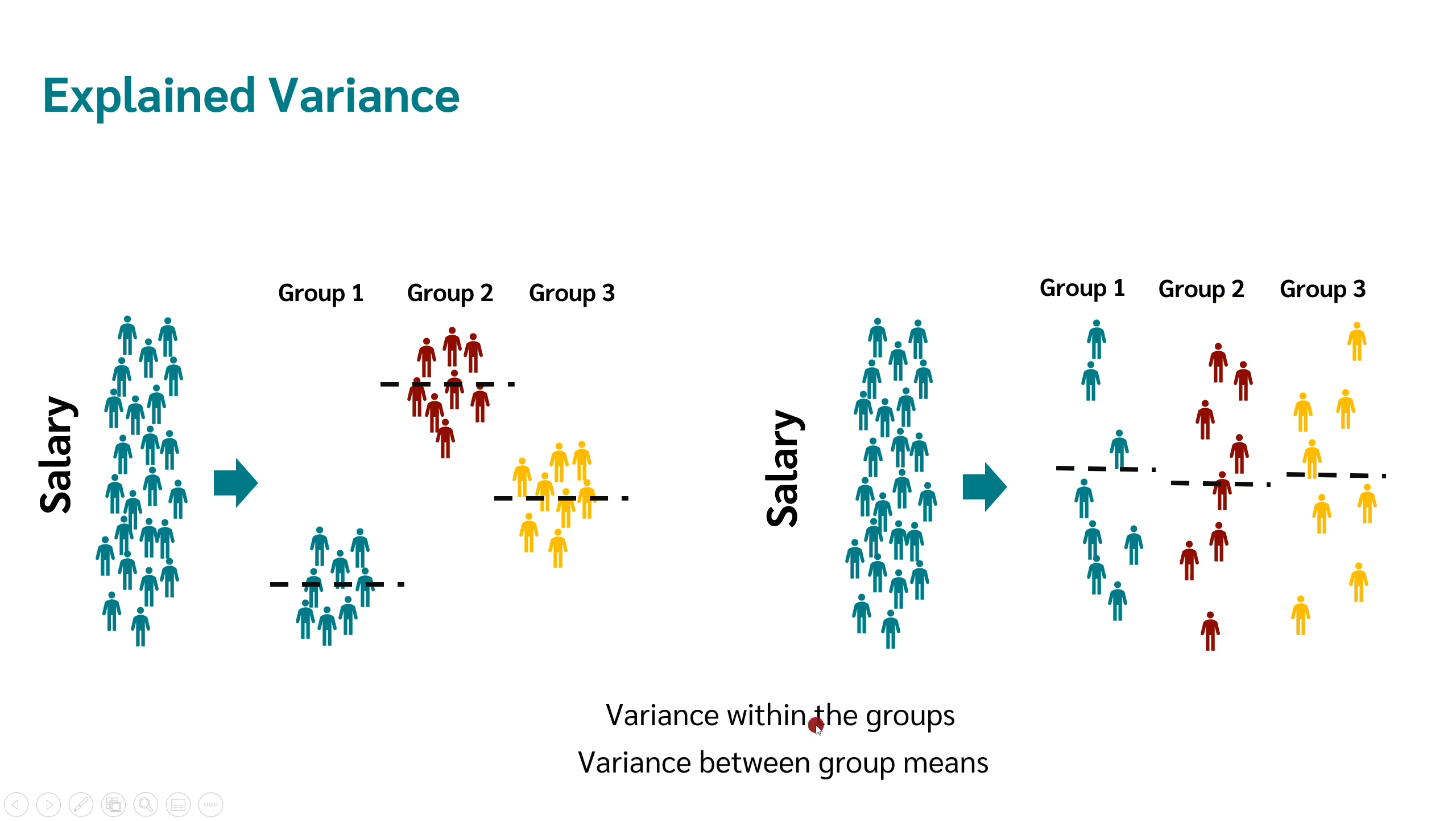If we now look at the variance within the groups, we can see that in this case, we have very small variances within the groups. So within this group, we have a very small variance. Within that group, we have a small variance and also in the last group. On the other hand, the variance between the groups is very large because the mean values of the individual groups are very far apart. In the other case, we have a very large variance within the groups. However, the variance between the groups is very small because the mean values of the groups are very close together.